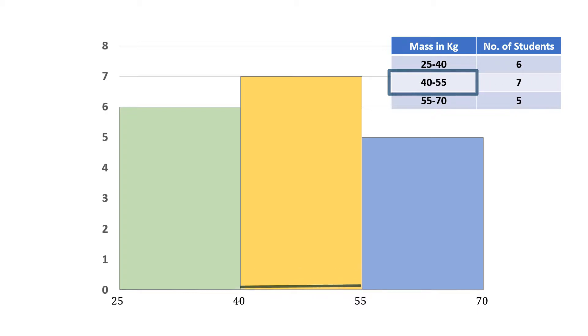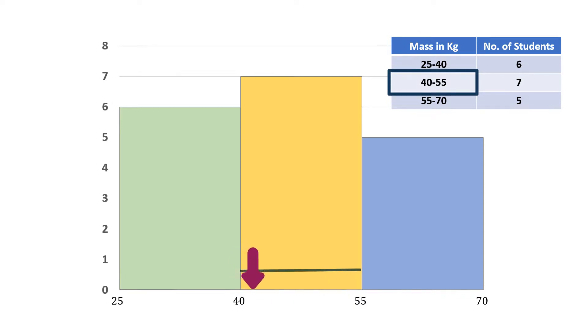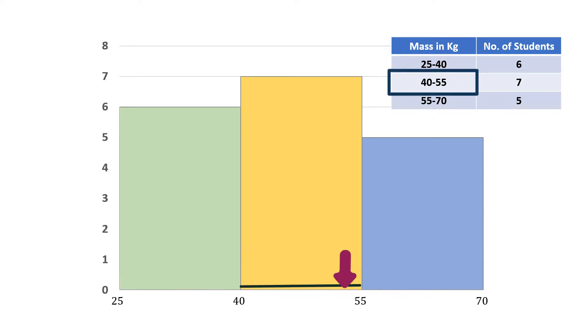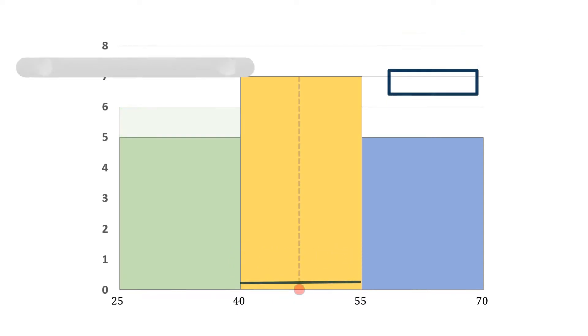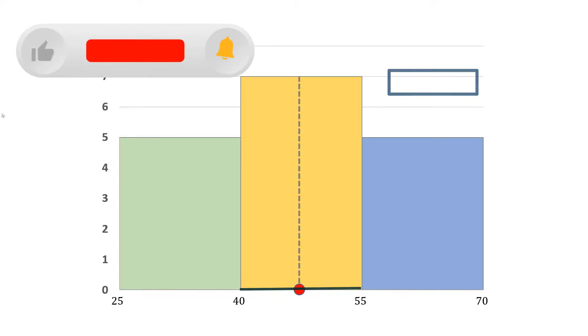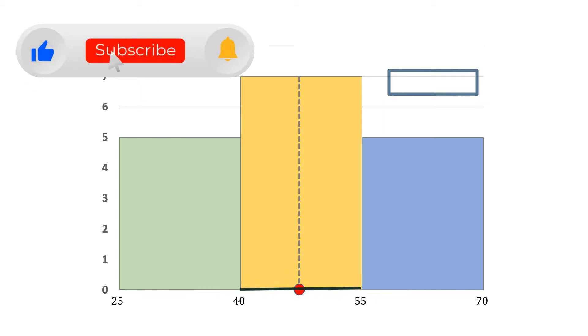Here, 40 to 55 is the modal class. Hence, the mode must be greater than or equal to 40 and less than or equal to 55. We need to find the exact value of mode.